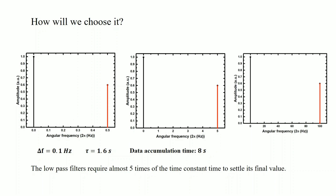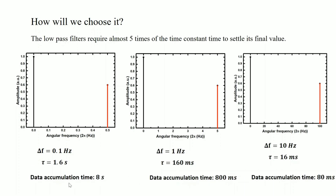To avoid this situation, for the second scenario we can choose a bandwidth between 0 and 0.5 Hz. For example, if we choose delta f equal to 100 mHz, tau will be 160 milliseconds and the data accumulation time will be 800 milliseconds. In this case, the data accumulation time is greatly reduced and we can acquire data much faster compared to the first case.